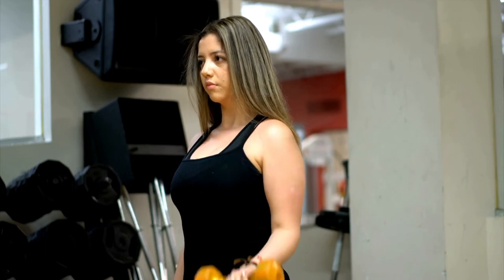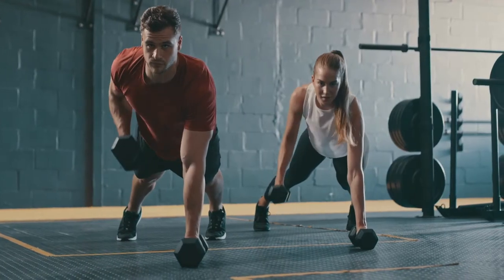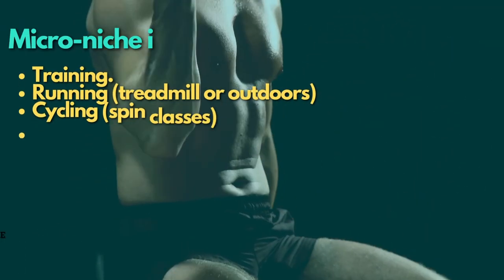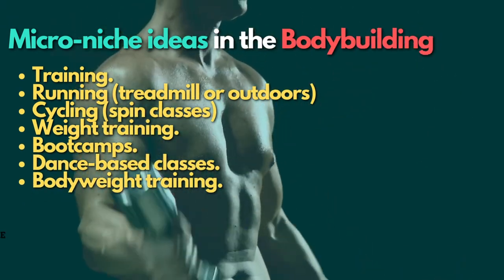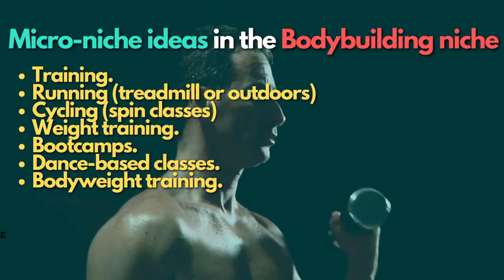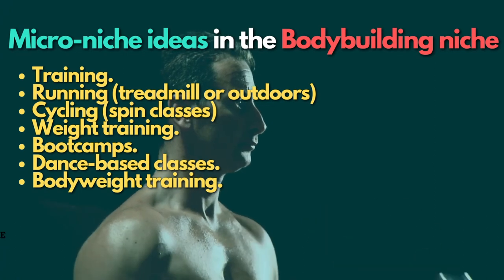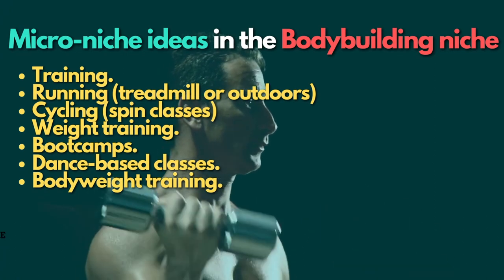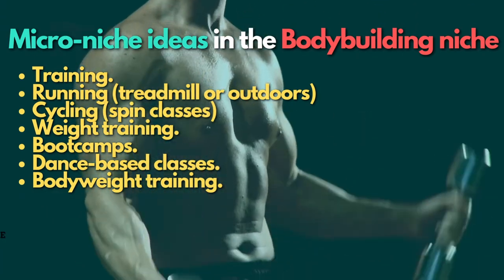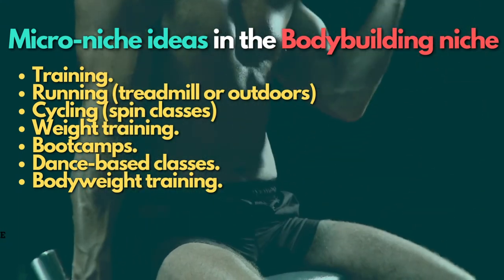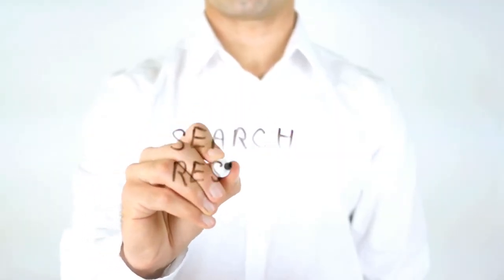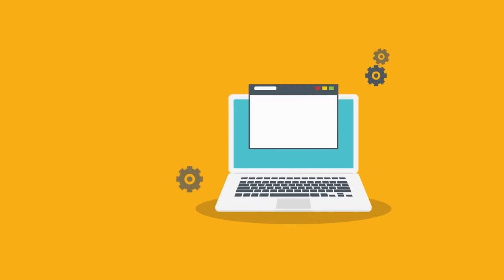Niche number four: bodybuilding. Bodybuilding is a broad topic like weight loss that can be broken down into various micro niches. There is much competition in bodybuilding, so targeting a micro niche is an excellent approach. Some micro niche ideas include: running (treadmill or outdoors), cycling and spin classes, weight training, boot camps, dance-based classes, and bodyweight training. Google prefers websites that cover all topics relevant to a single micro niche, so focus your content accordingly.